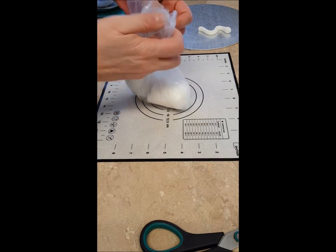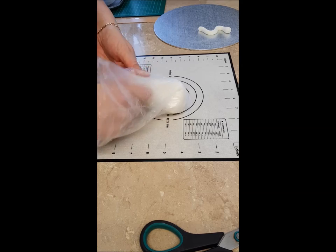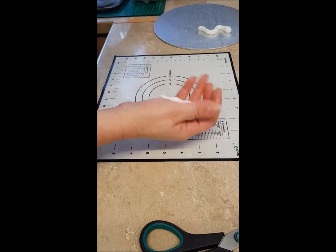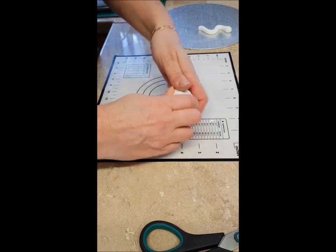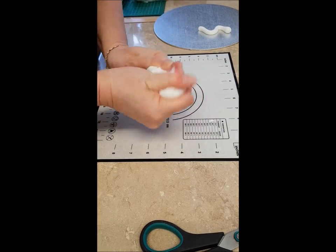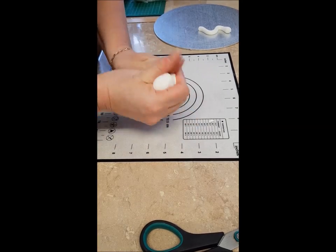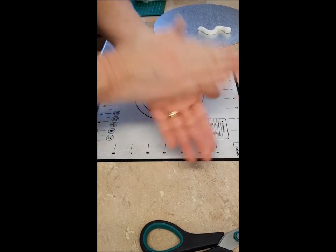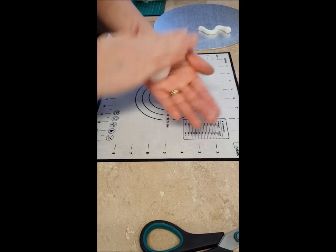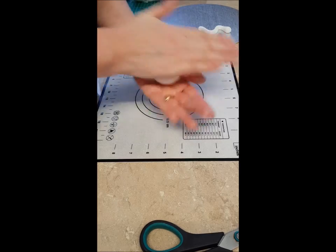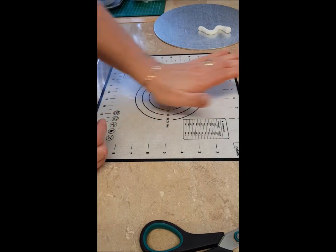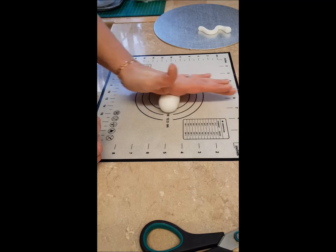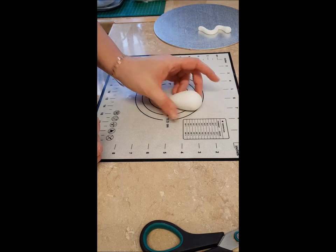Another bit of gum paste for your body. You want to do with that like a little bit of a sausage shape, but with it going down, so if you angle it so it goes down at one side a bit, so it's a little bit like that.